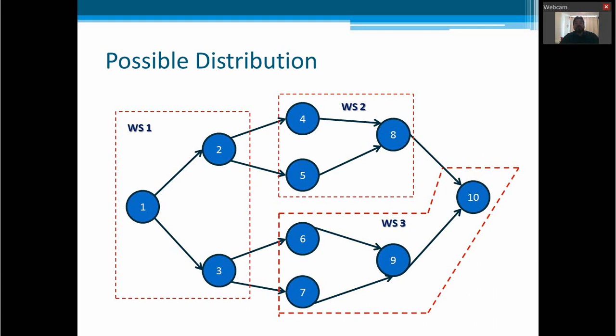For example, this is a possible distribution. We are going to work in workstation 1 task numbers 1, 2, and 3. Workstation 2 will take 4, 5, and 8. And workstation number 3 will work with tasks 6, 7, 9, and 10. If we add the process time for each task, we will have 120 seconds for workstation 1, 66 seconds for workstation 2, and 88 seconds for workstation 3.